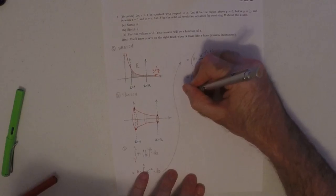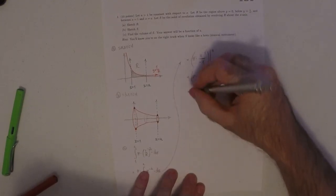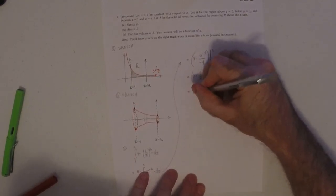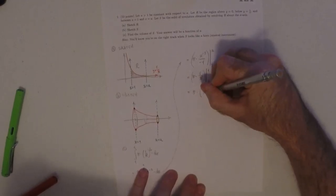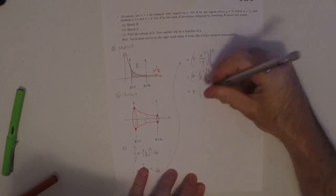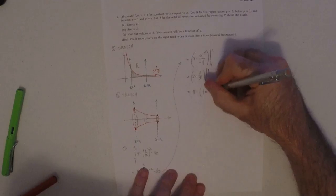So then this will be, well, leaving the pi factored out, that will be pi multiplied by 1 minus 1 over A.